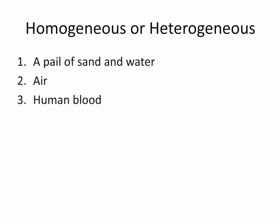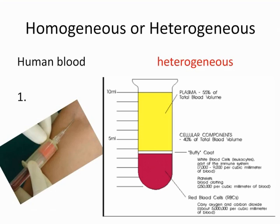Human blood — homogeneous or heterogeneous? Human blood is a mixture of many things, such as the oxygen-carrying red blood cells, the white blood cells that are part of our immune system, and platelets that help wounds heal. All of these parts can be seen under a microscope. A tube of blood collected at the clinic may look evenly mixed, but when left to stand for an hour, the heavier iron-containing red blood cells settle to the bottom. The lighter white cells sit on top, and the platelets and plasma — the lightest components — sit atop the white cells. Once blood has settled, it does not look uniform in composition. It is a heterogeneous mixture.